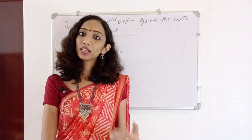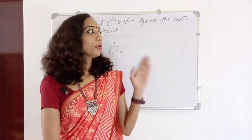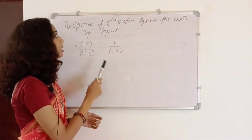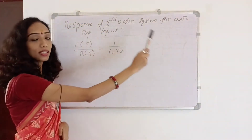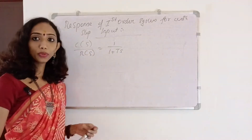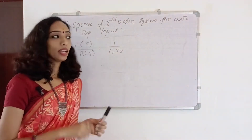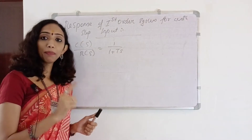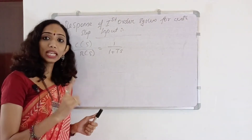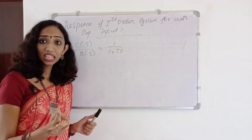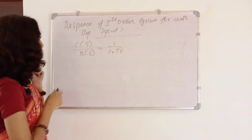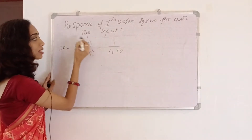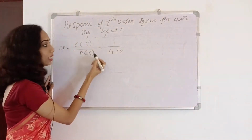The second order system has two videos. What is the response of the first order system? I am heading to the response of the first order system for unit step input. The transfer function is defined as the Laplace transform of output to the Laplace transform of input.